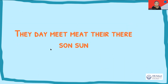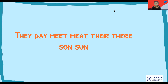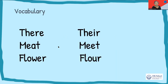Here is a sentence — have a look at it and see how you can say it: 'They meet their son.' As you can see, some of the words are repeated. I'm saying 'they' twice, 'meet' twice, 'their' twice, and 'son' twice. These are called homophones — words which sound exactly the same, however have different meanings and different spellings.